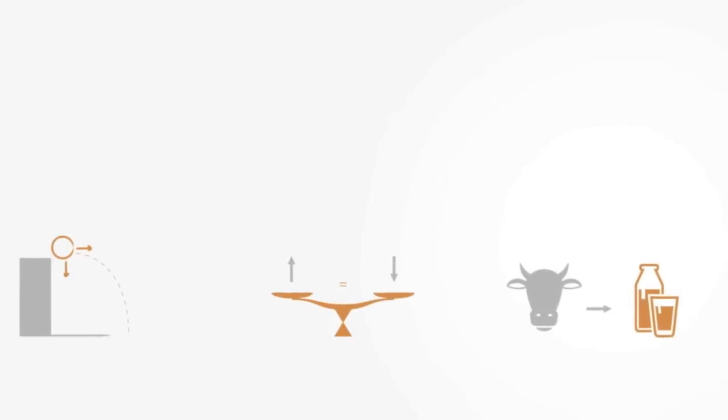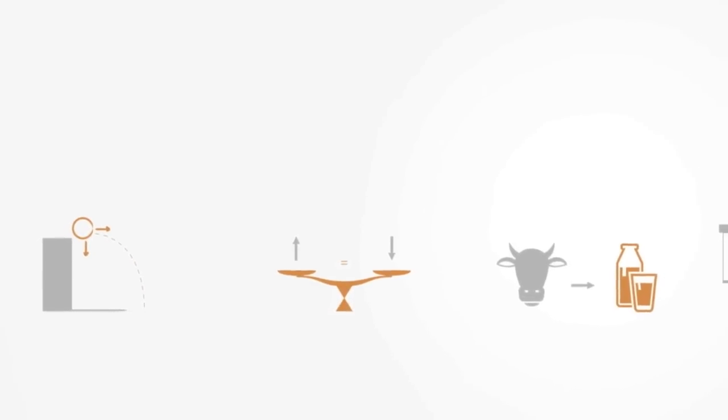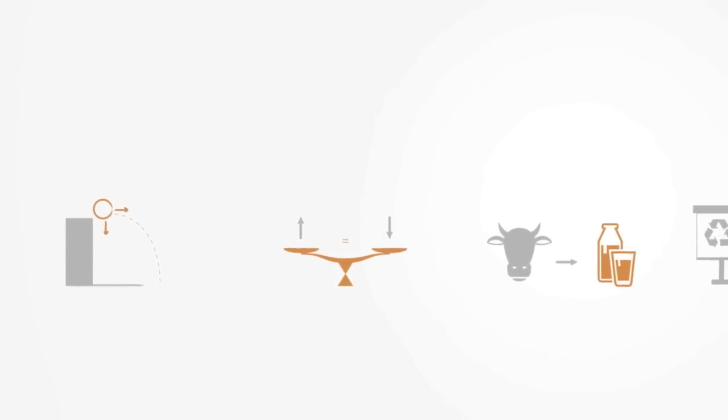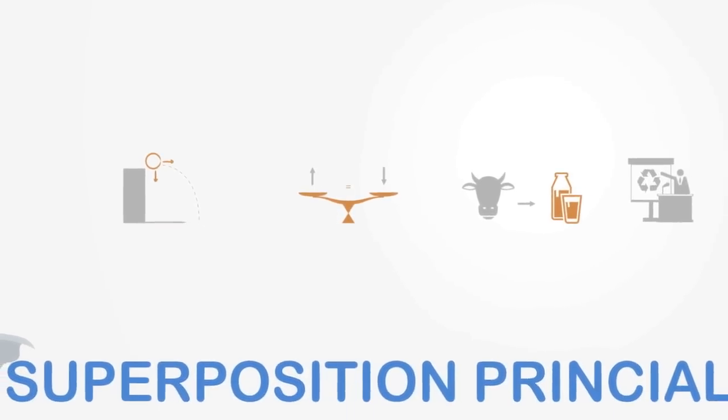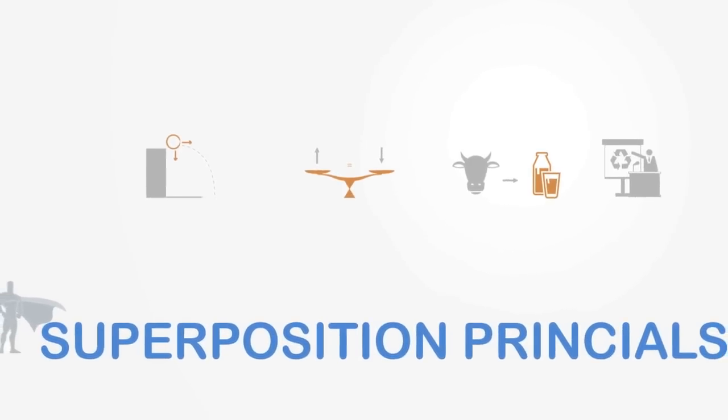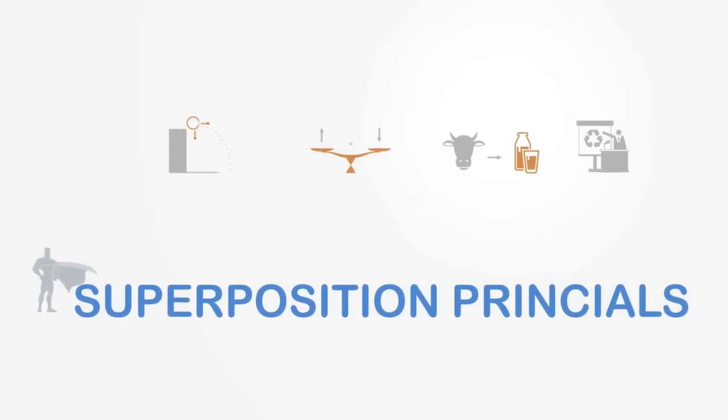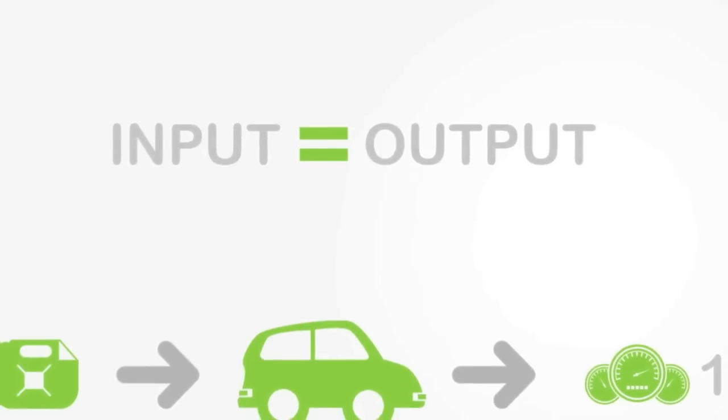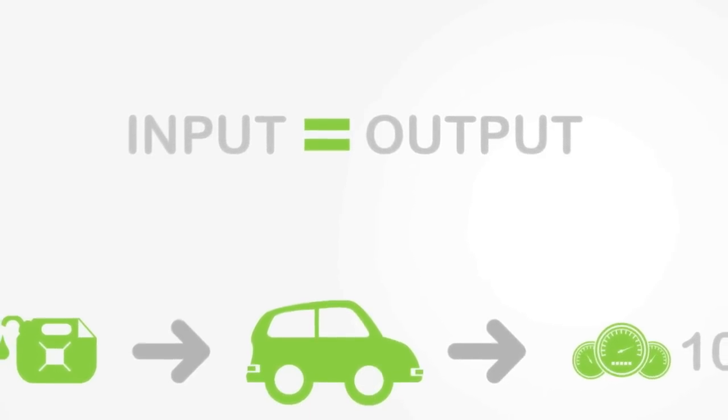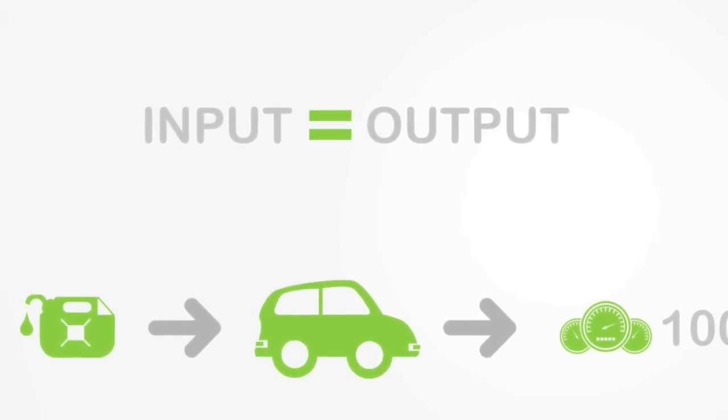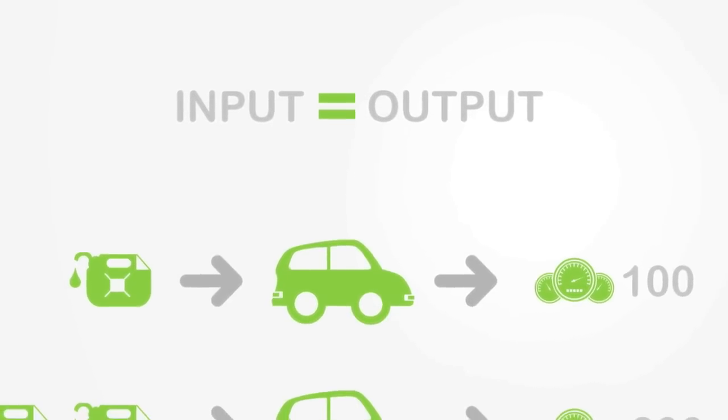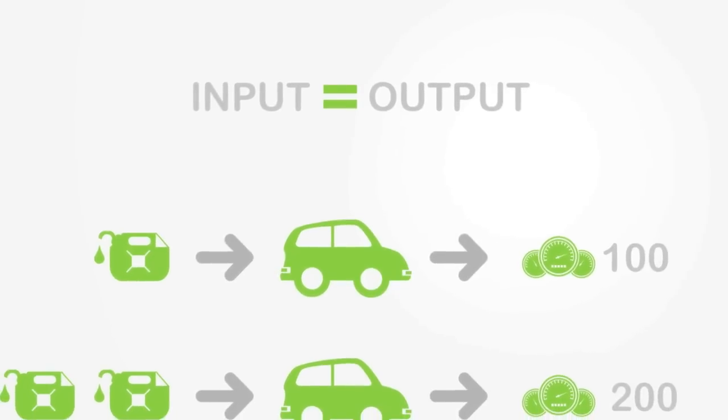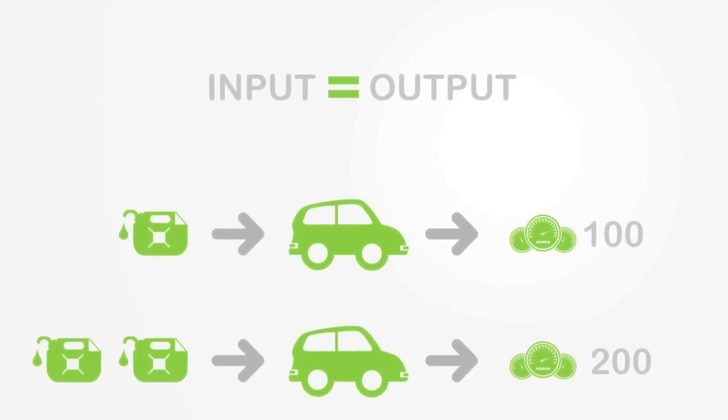There are of course many examples of linear systems, particularly within physics. But we can capture the underlying logic of linear systems in general with a model that has only two simple rules called the superposition principles. Which states firstly that the output to the system will always be directly proportional to the input. So if there is a linear relationship between the amount of fuel I put in my car and how far it will go, then if I put twice as much fuel in the car it will go twice as far.